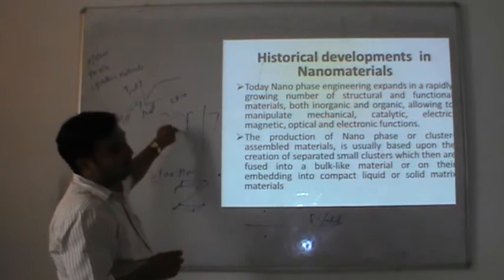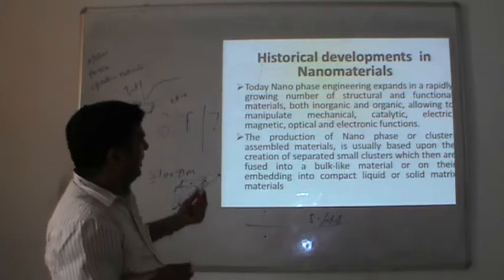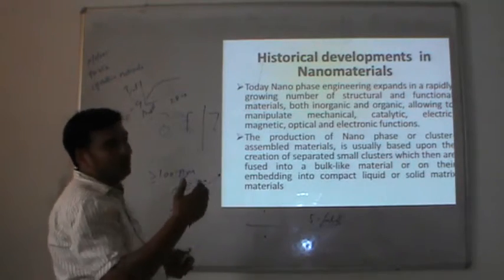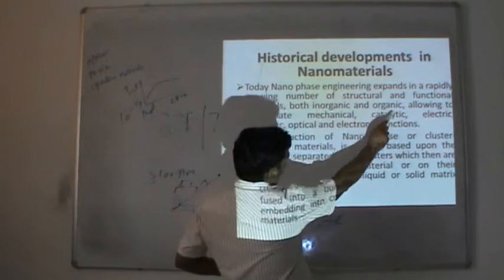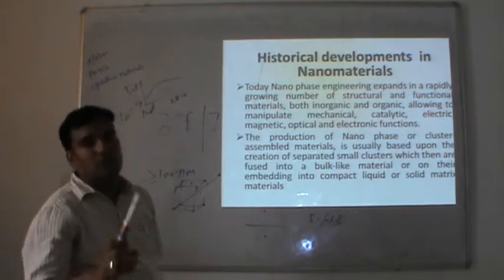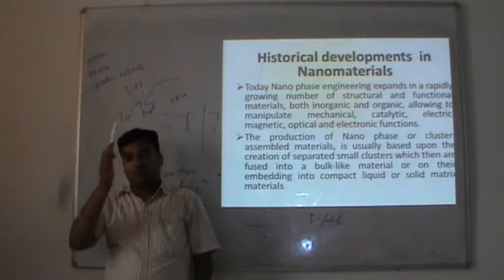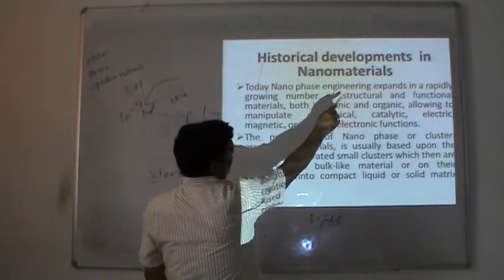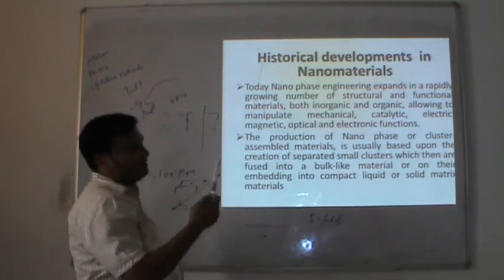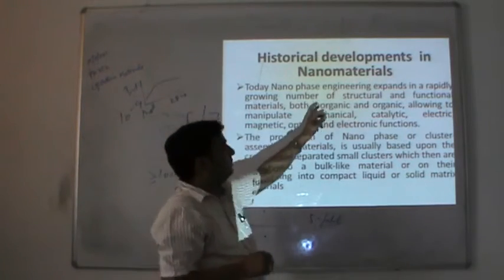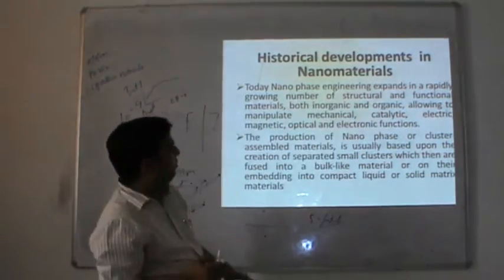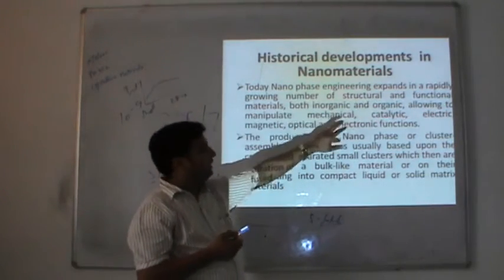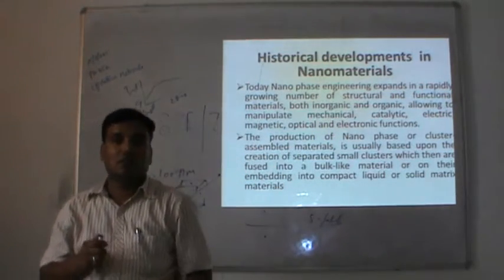By changing the structural and functional properties, we can change the inorganic and organic properties of the material. By manipulating these properties, we can change most properties of a material — like its strength and stiffness. The catalytic property can be increased by the help of nanostructures. Then there are electric and magnetic properties.